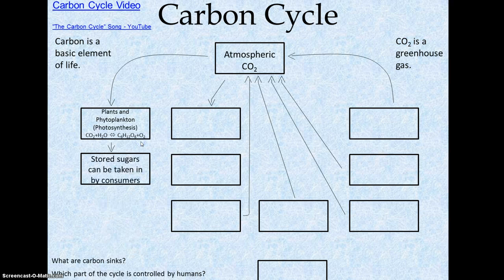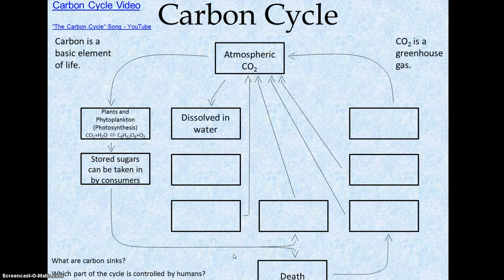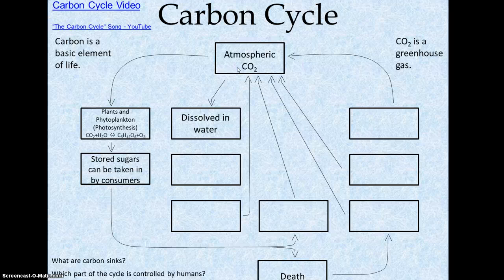The plants store that carbon as sugars and glucose, and the plants can then be eaten by consumers. If they're eaten by consumers — or even the plants themselves — there could actually be an arrow going to death. The consumers or the plants themselves will die eventually. The second way that carbon dioxide comes out of the atmosphere is by being dissolved in water.